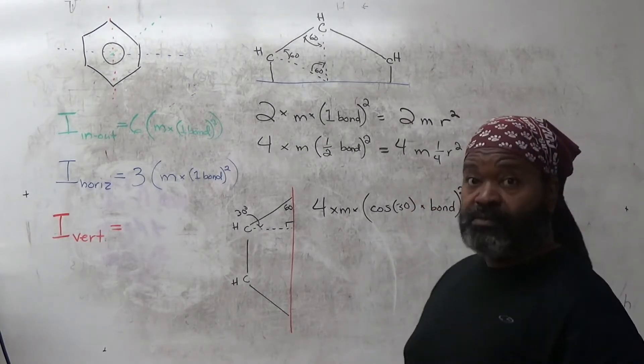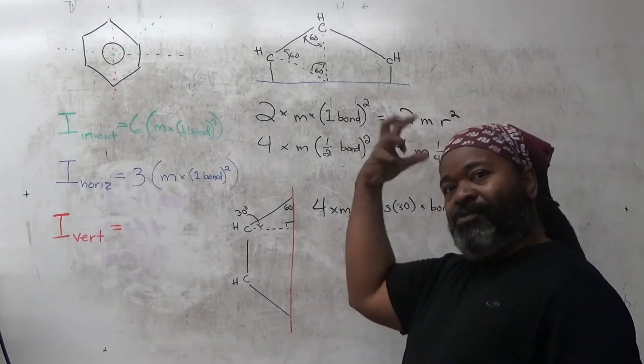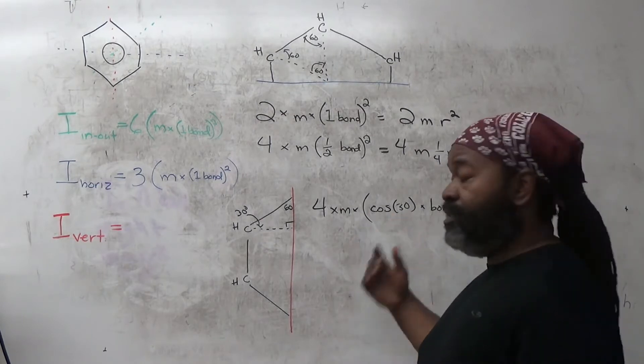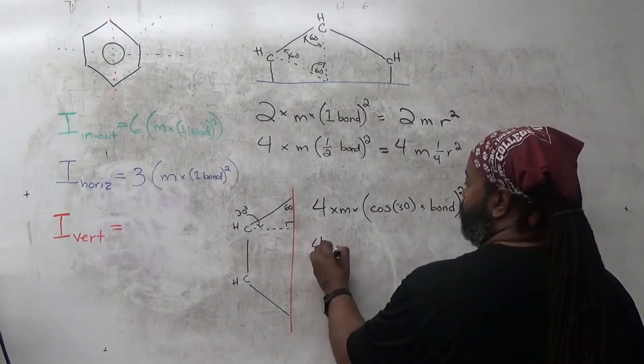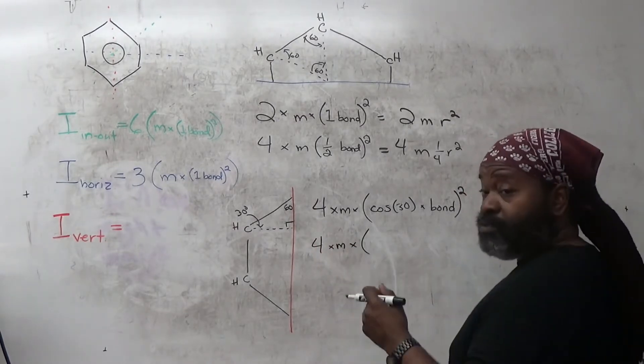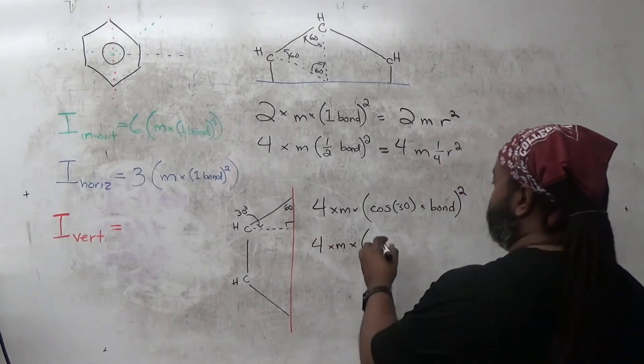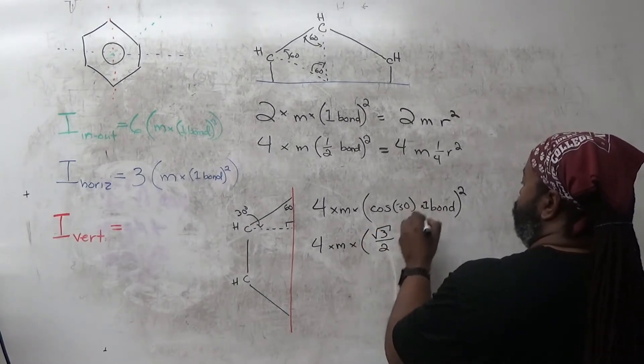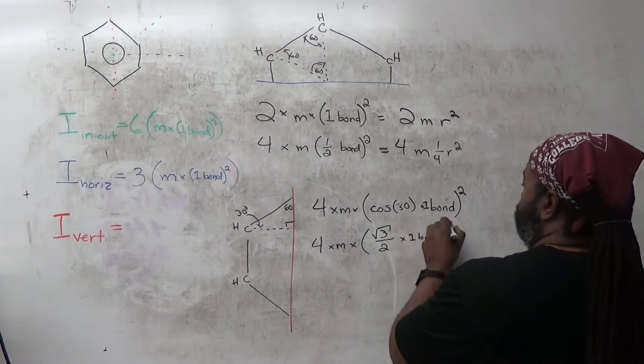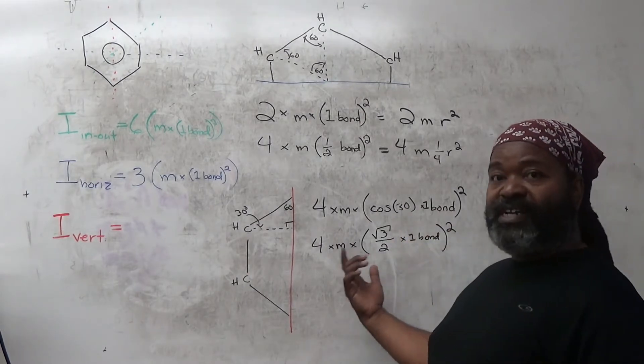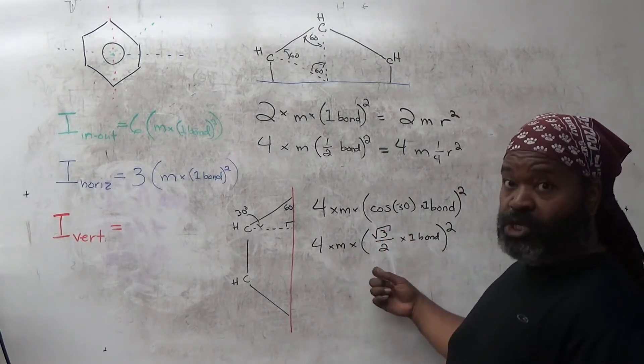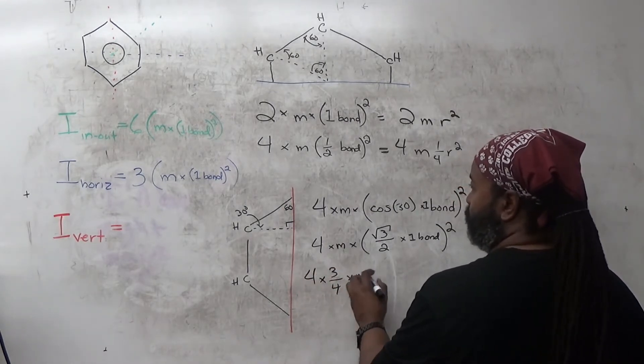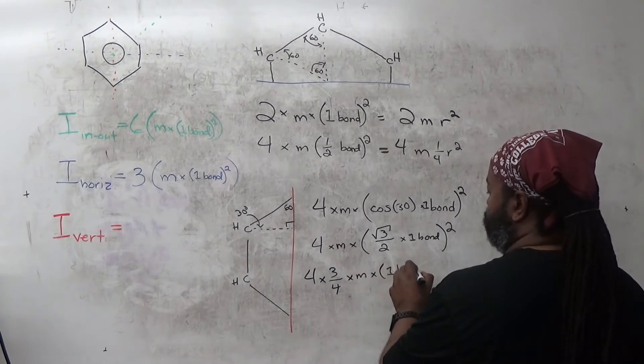And that has to be squared. So now we have to reach back into our math knowledge for what the value of cosine of 30 is. And so that's 4 times the mass. Cosine of 30 ends up being square root of 3 over 2, and this one bond, that's all squared. So now if I square this, I'm going to get 3 over 4. So 4 times 3 over 4 times the mass times that one bond squared.